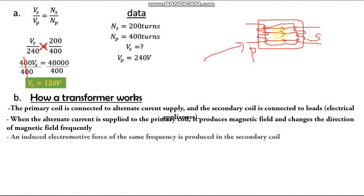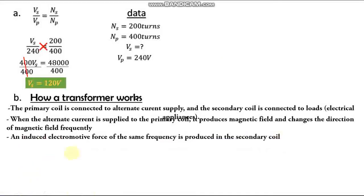The third point: because of the change in the magnetic field direction, an electromotive force of the same frequency is induced in the secondary coil. That is how a transformer works. Explaining these three points will score you four marks.